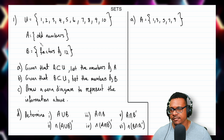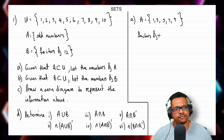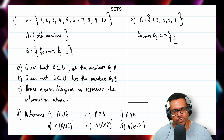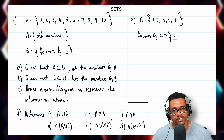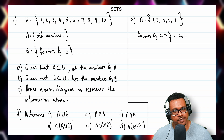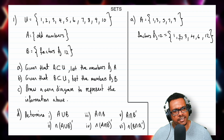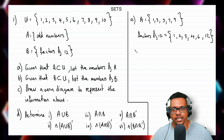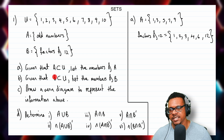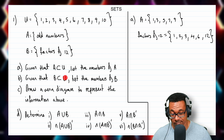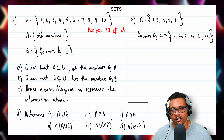Now the same thing applies to the factors of 12. The factors of 12 are numbers that go into 12 without leaving a remainder: 1, 2, 3, 4, 6, and 12. But since B is a subset of the universal set which only goes up to 10, 12 is not a member of the universal set and therefore 12 cannot be a member of set B.